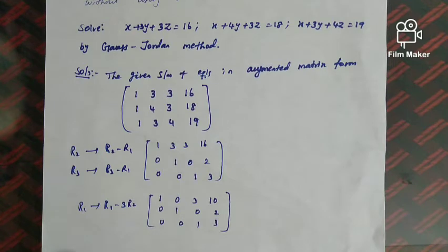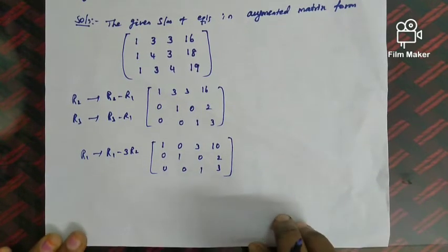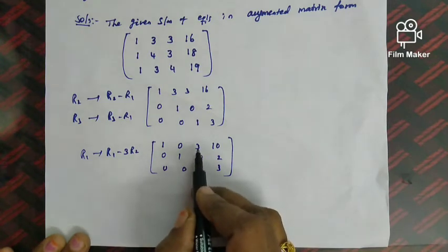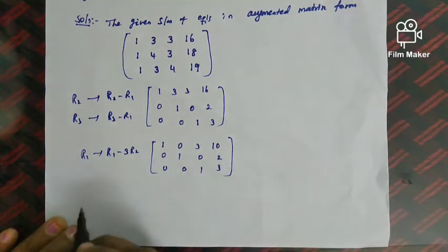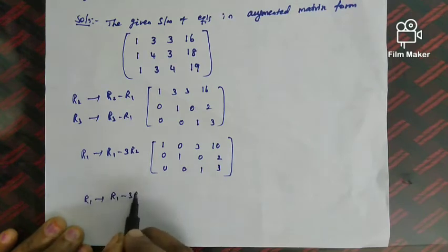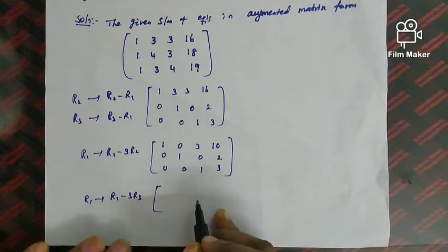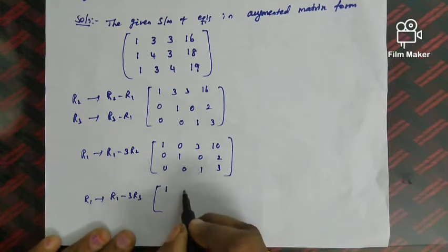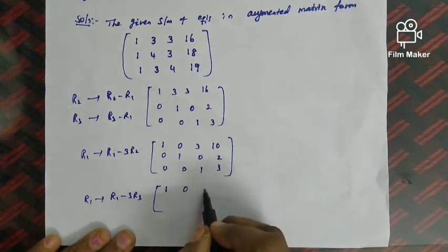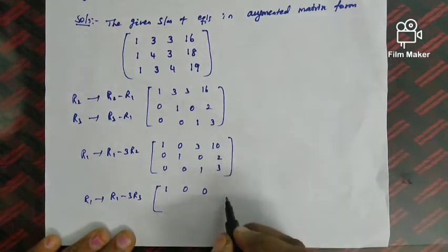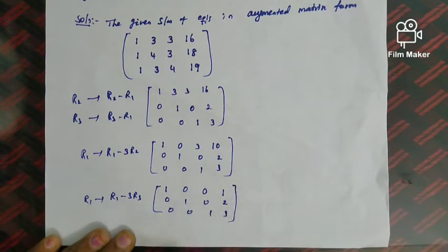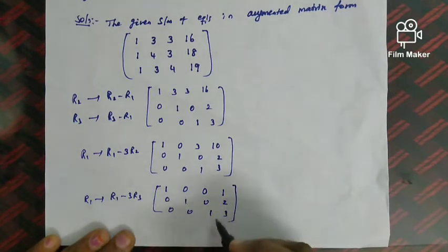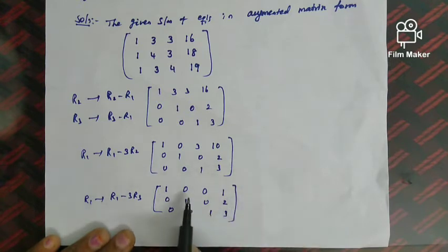We apply R1 = R1 − 3·R3, giving: (1, 0, 3−3, 10−9) = (1, 0, 0, 1). The matrix now becomes [1, 0, 0 | 1; 0, 1, 0 | 2; 0, 0, 1 | 3]. The diagonal elements are 1, 1, 1 and all off-diagonal elements are 0. The augmented matrix has been successfully reduced to diagonal form.